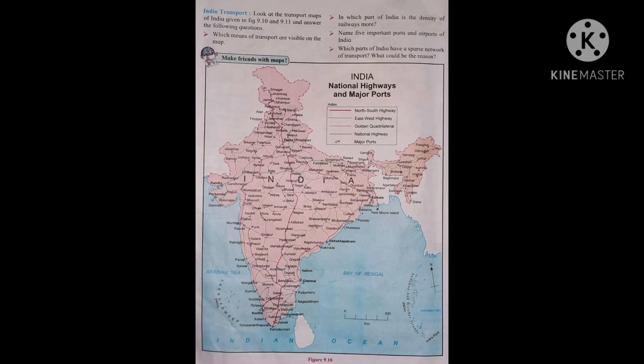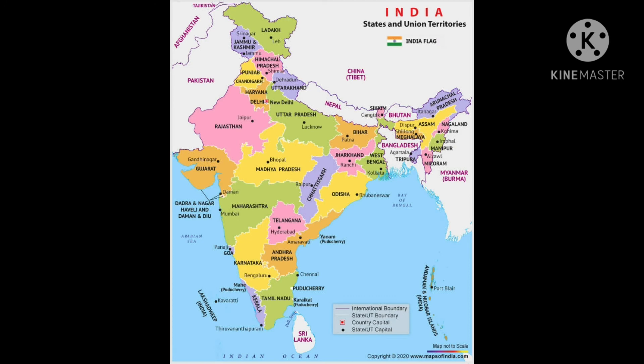Second question: in which part of India is the density of railways more? The density of railways is more in the northern plains region. Next question: name five important ports and airports in India. Important ports are Mumbai, Visakhapatnam, Haldia, Chennai, and Kandla. Important airports are Delhi, Mumbai, Bengaluru, Chennai, and Kolkata.